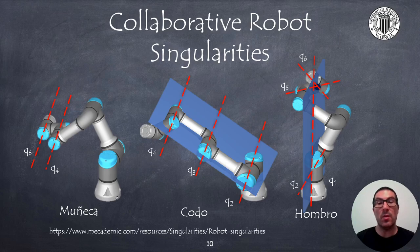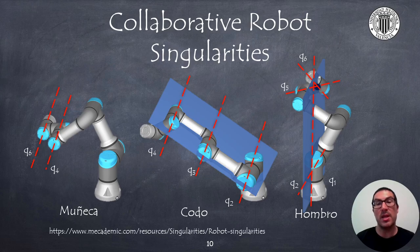The wrist singularity occurs when axes 4 and 6 are parallel, while the elbow singularity occurs when axes 2, 3, and 4 are contained in the same plane. The shoulder singularity occurs when the point at which axes 5 and 6 intersect is contained in the plane formed by axes 1 and 2.